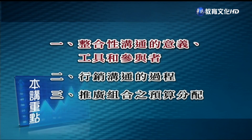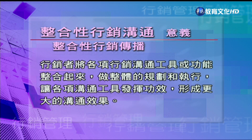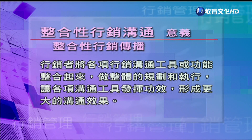最后我们要说明怎么样去决定一套有效的推广组合，各个元素的比重又该怎么决定，怎么去强化沟通的效果，是我们行销活动的一个重点。行销者必须要跟顾客进行有效的沟通，让顾客了解我们产品或者服务的利益，建立对于我们品牌的偏好。整合性行销沟通使行销者把各项行销的工具或者是功能整合起来，做整体的规划跟执行，让各项沟通的工具都能够发挥它的成效，而形成更大的沟通的效果。